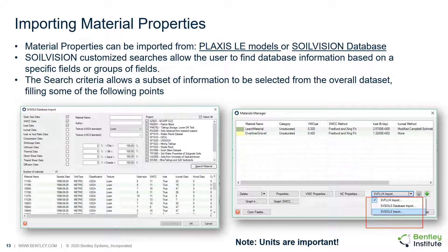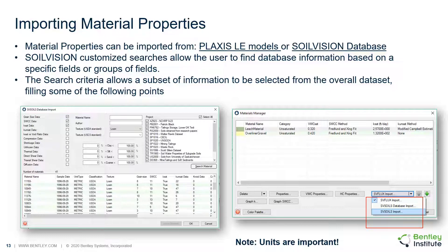It is also possible to import soil properties from other numerical models or from the SoilVision database. A user interface is provided to expedite the searching process to identify unsaturated laboratory data from the SoilVision database. Relevant or similar materials can be selected based on classification, grain size properties, or the type and amount of data available. This functionality is useful to identify soils that might be similar to the soils at a present site.